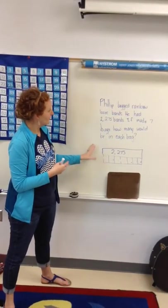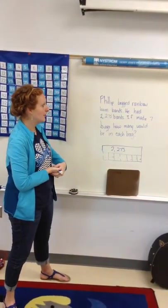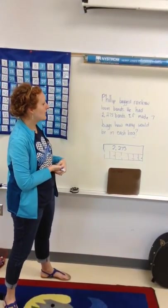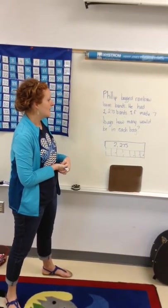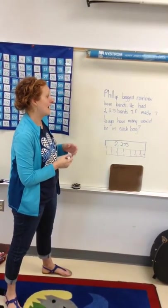This is a word problem right here. Phillip bagged rainbow loom bands. He had 2,275 bands. If he made seven bags, how many would be in each bag?